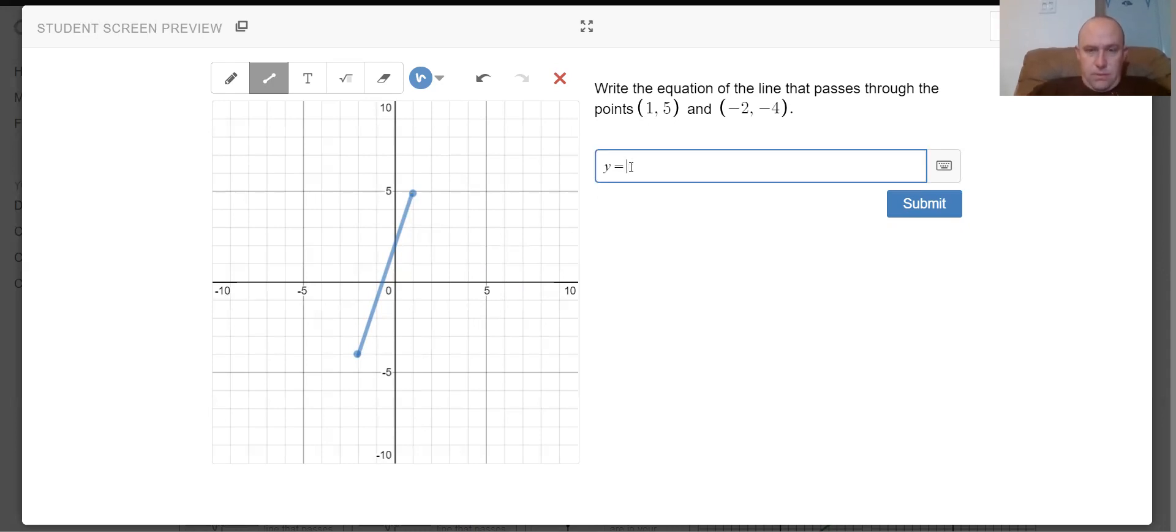Looks like plus two on the end. And then for my slope, it looks like from here it goes up one, two, three, and across one. So it looks like it's a slope three over one, which is three. And you can see therefore that is correct.